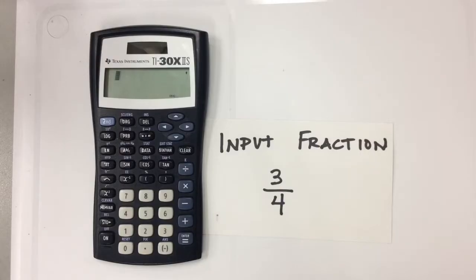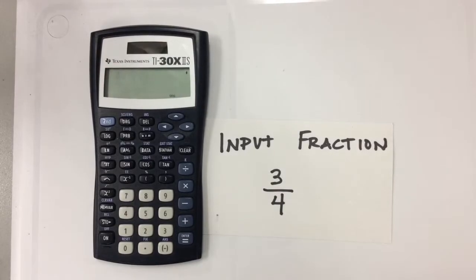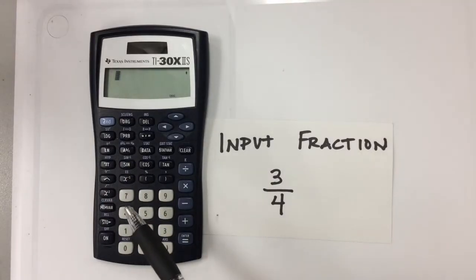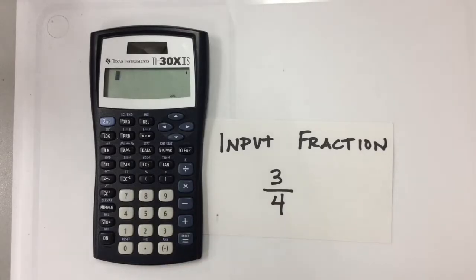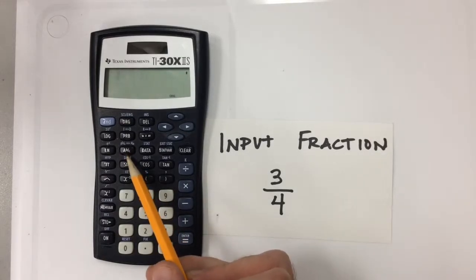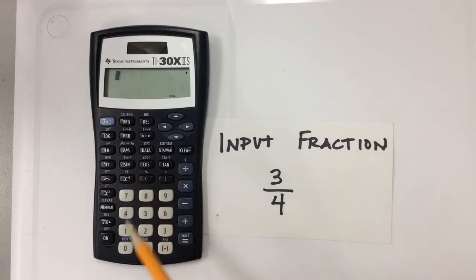I'm going to try to teach you how to use this calculator here, and the first thing I want to show you how to do is how to input a fraction. Let's say I have the fraction three-fourths. If I want to input three-fourths into this calculator, let me point out where we are working right here. This is kind of the magic button right here — this A, B over C button. That particular button is basically the magical fraction button. A, B over C — that's the button we use to input the fraction.